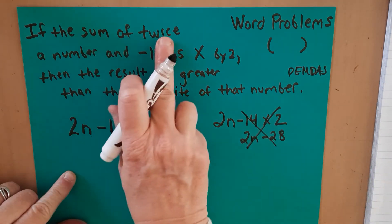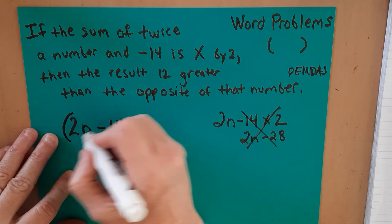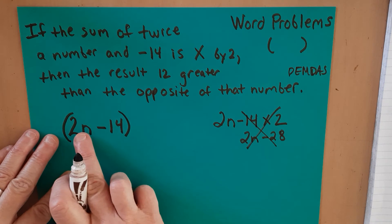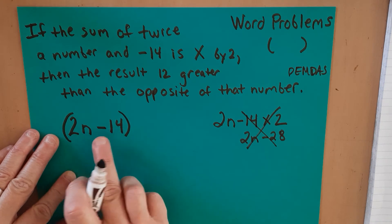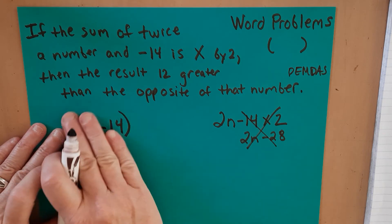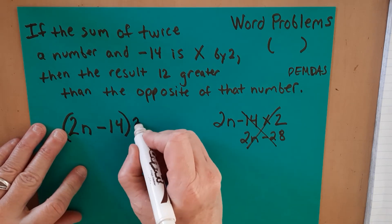When you have the sum of twice a number and negative 14, we have to put that in parentheses because that has to stay together. This is the sum. Once you add them, which in fact we're going to subtract it here, once you do that, that becomes one number. And that one number needs to be multiplied by 2.